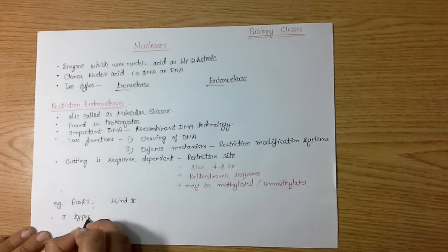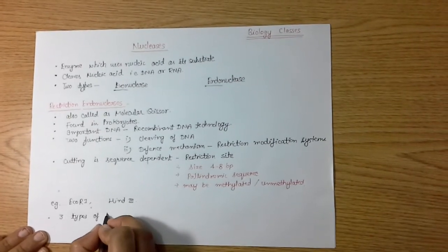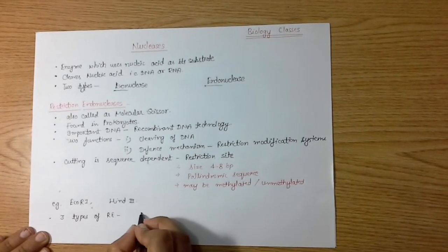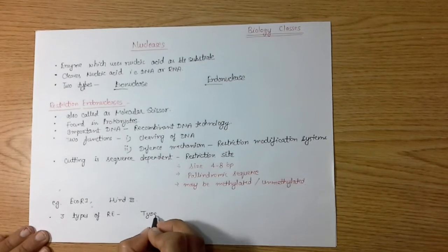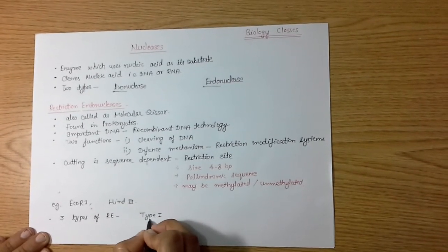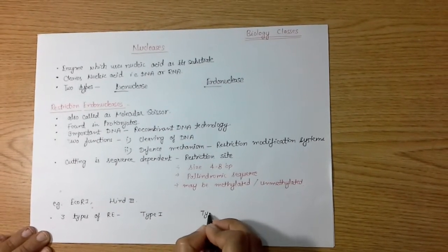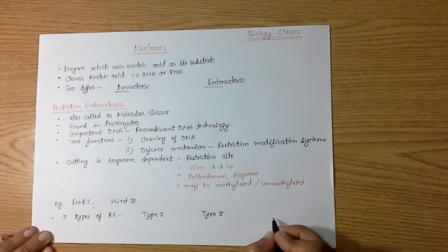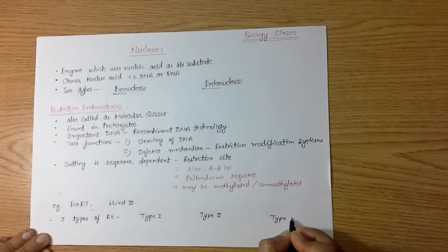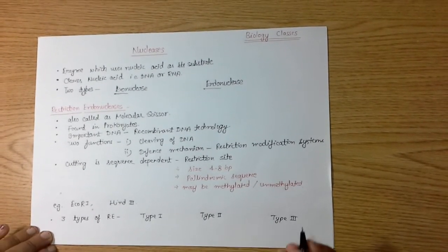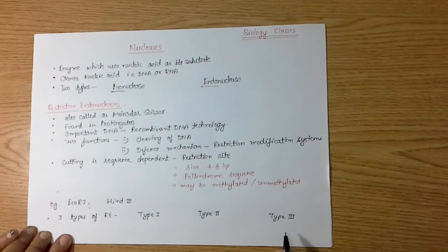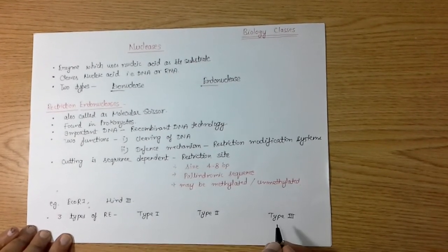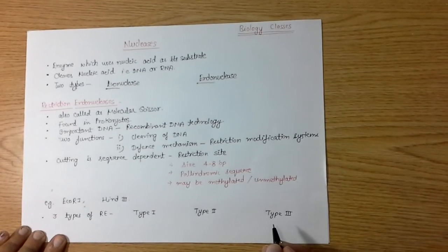Further, if I talk about the different types of restriction enzymes, there are three different types: type 1, type 2, and type 3. The further classification of type 1, type 2, and type 3 we will add in our next video. Thank you for watching.